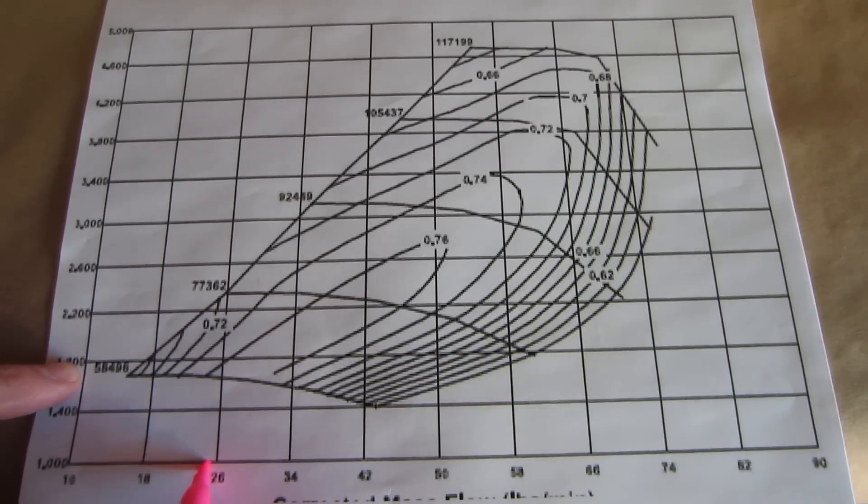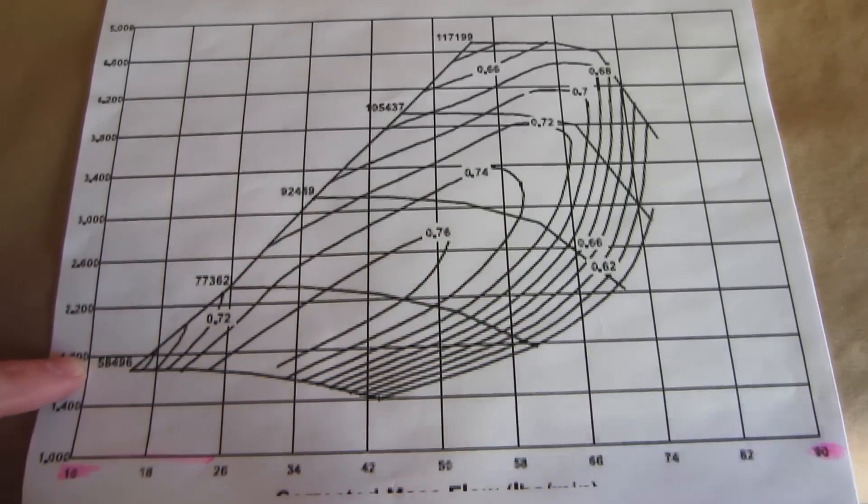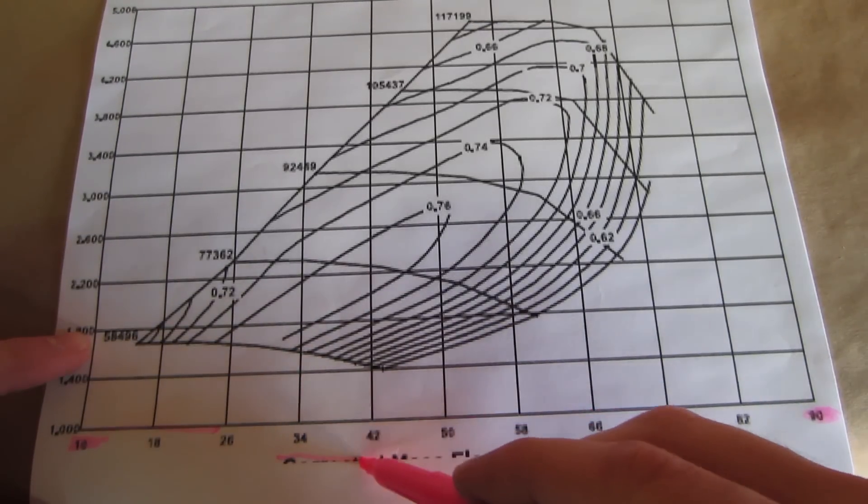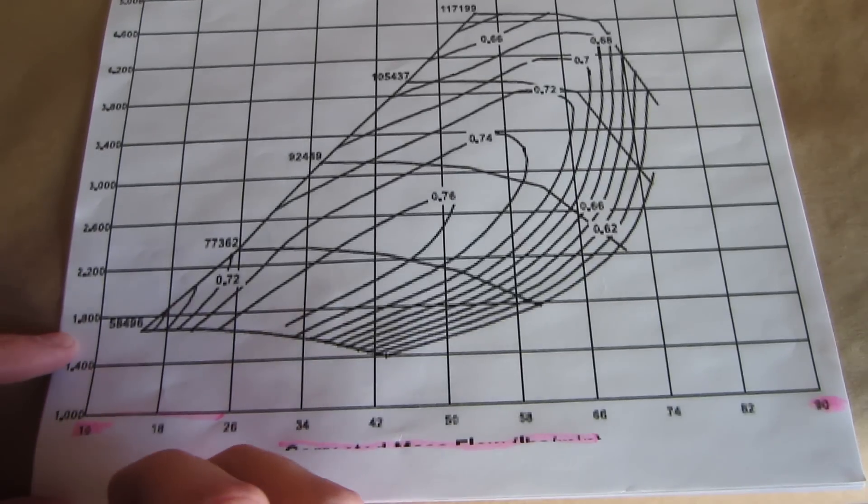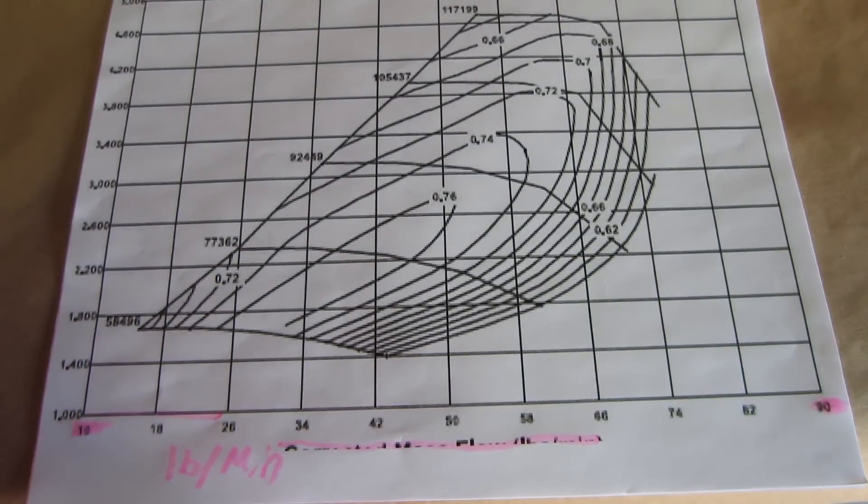The x-axis, or the horizontal line, is numbered from 10 through 90, and this represents the airflow of the compressor wheel. Although my printer cut it off, this particular map states corrected mass flow, pounds a minute, so we know that the unit of measurement is already in pounds a minute for this particular map.